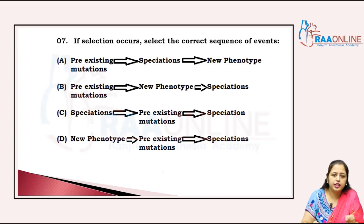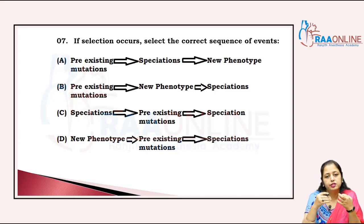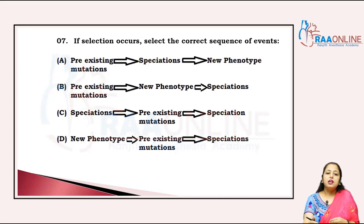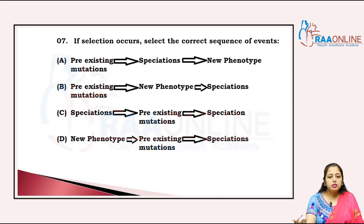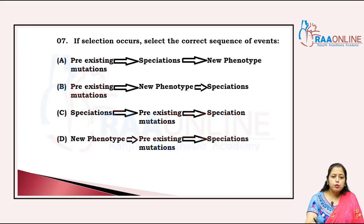If selection occurs, select the correct sequence of events. When we generate a new species with new traits and new characters, what kind of changes are there? It involves pre-existing mutations. The particular animal formed by pre-existing mutations then shows a new phenotype, then speciation — the formation of a new species. So the answer starts with pre-existing mutation.